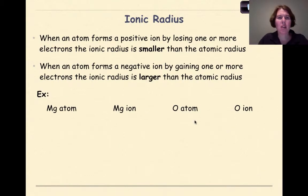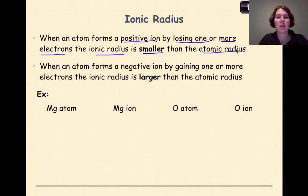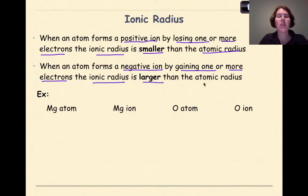Now let's talk about ionic radius. When an atom forms a positive ion by losing one or more electrons, the ionic radius is smaller than the atomic radius. When an atom forms a negative ion by gaining one or more electrons, the ionic radius is larger than the atomic radius.